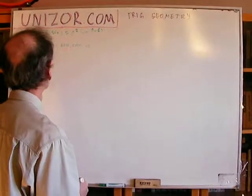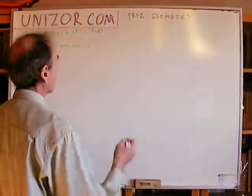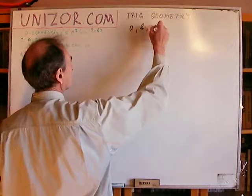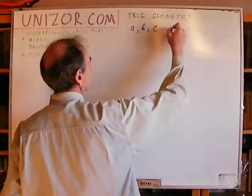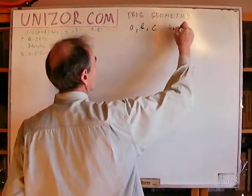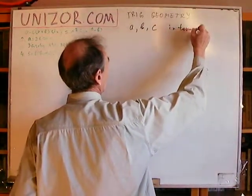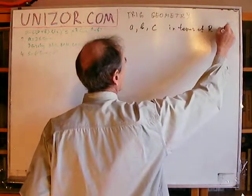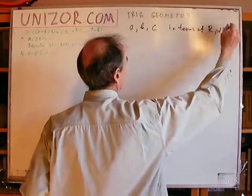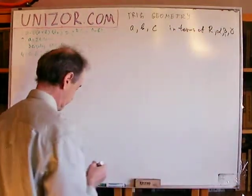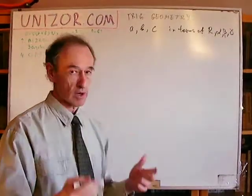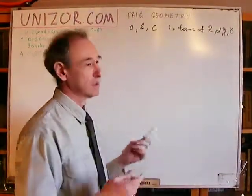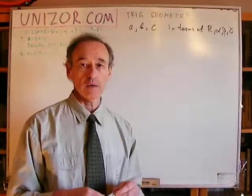Next problem: express sides a, b, and c in terms of R, α, β, and γ, where R is the radius of the circumscribed circle and α, β, γ are the angles of the triangle.